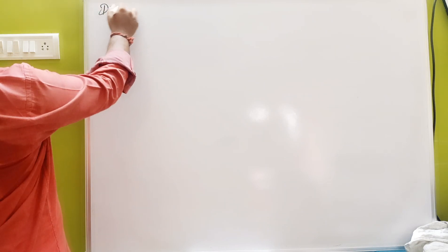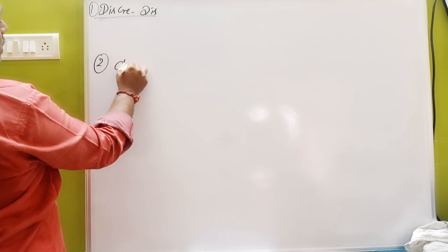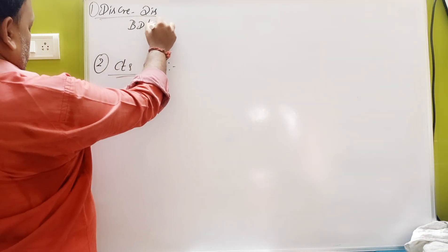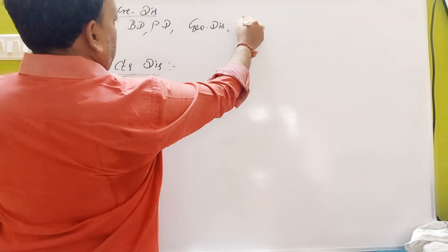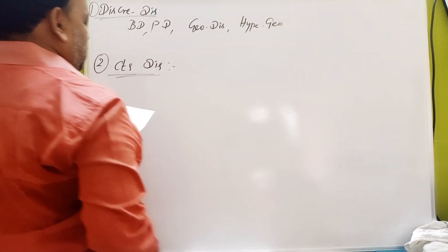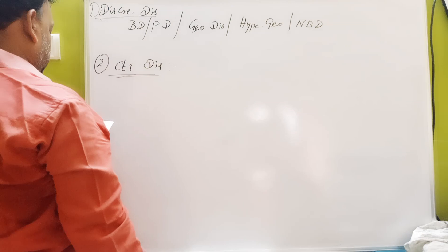First, the important thing is to try to do a shortcut and then we will show you. Tell me how many different things are discrete versus the continuous distribution — so this is a great question. Discrete distribution is PD, Poisson. This is the Negative Binomial Distribution. This is the Multinomial.